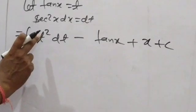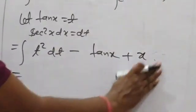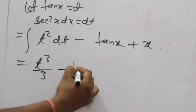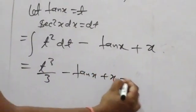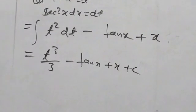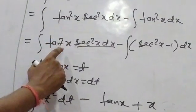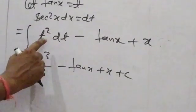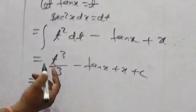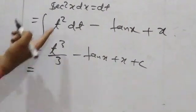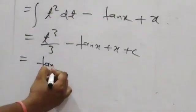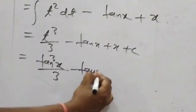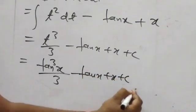Combining: T² dT integrates to T³/3, so the answer is tan³x/3 - tan x + x + C.